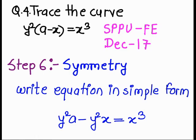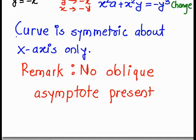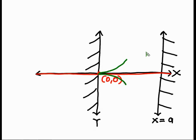In step number 6, we find the symmetry. For this particular example, the curve is symmetric about the x-axis. Now, to trace the symmetry about the x-axis, this is nothing but the symmetry about the x-axis.